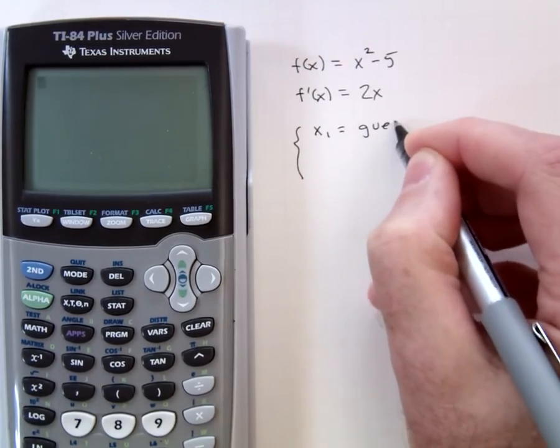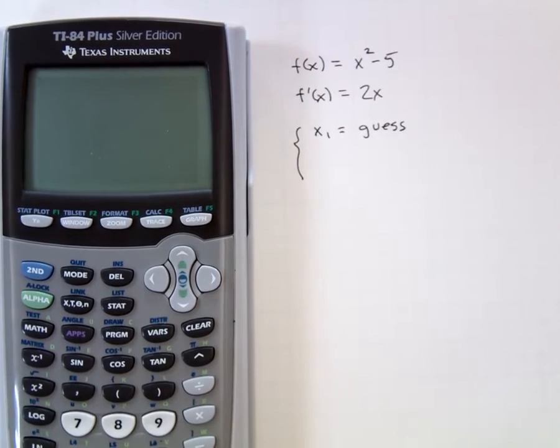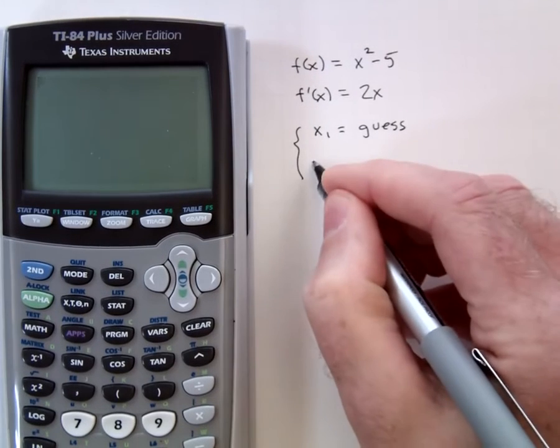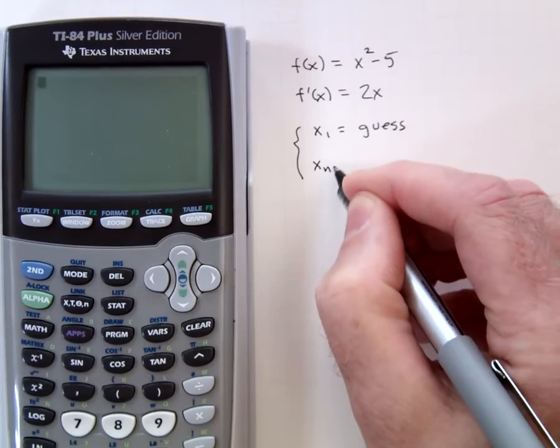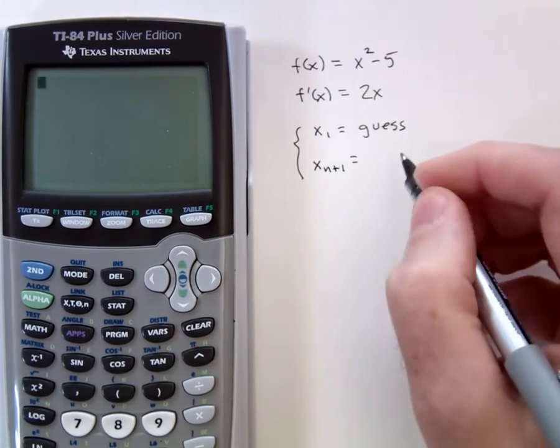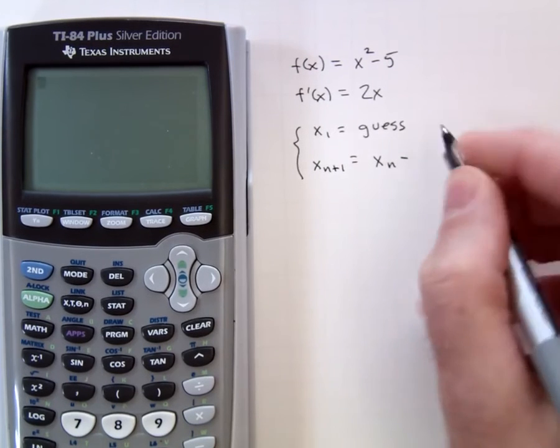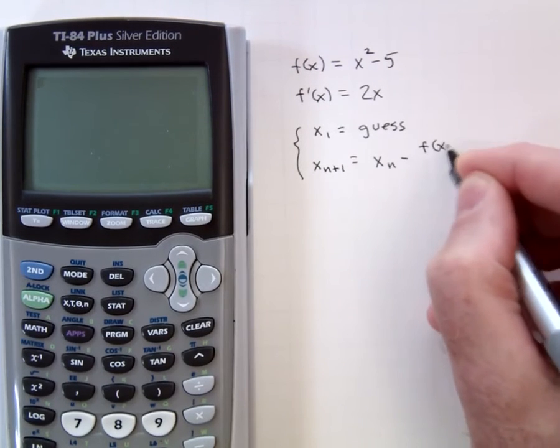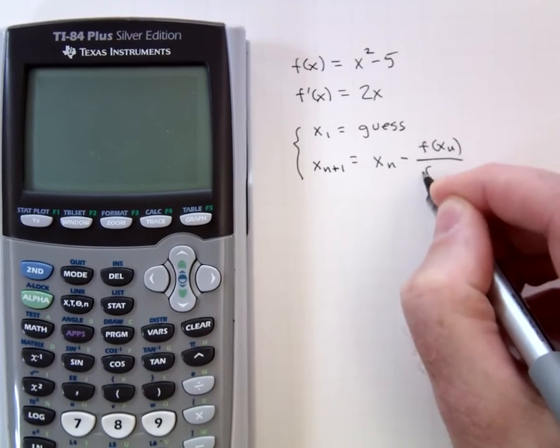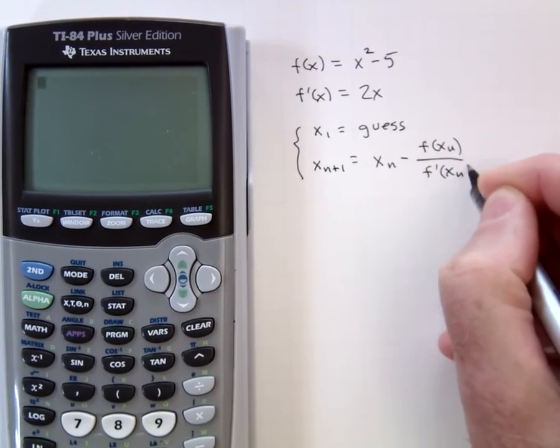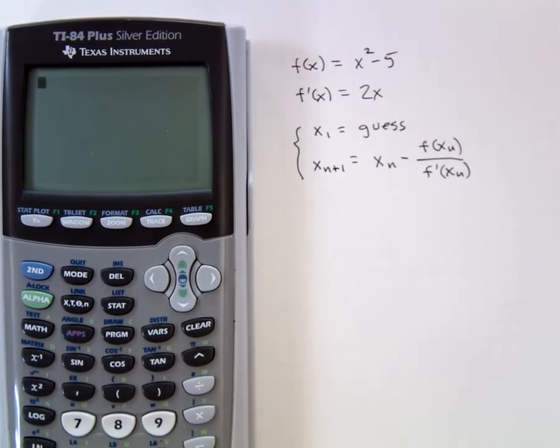What you do is you first make a guess, and hopefully it's an educated one. Then after that, you run it through this iterative formula that says each term after the first is its predecessor minus f of that value over f prime of that value. All we need the calculator to do is to store these functions and to keep running through this process.